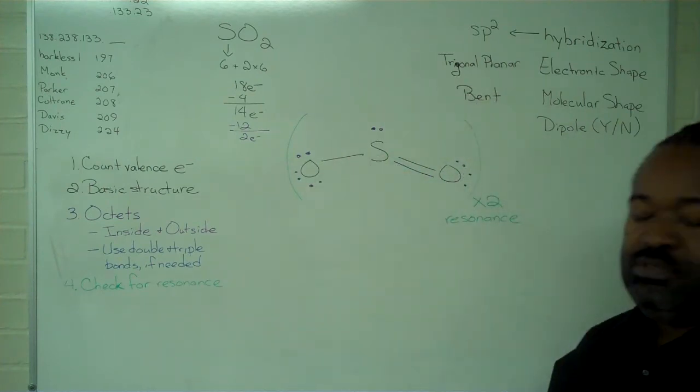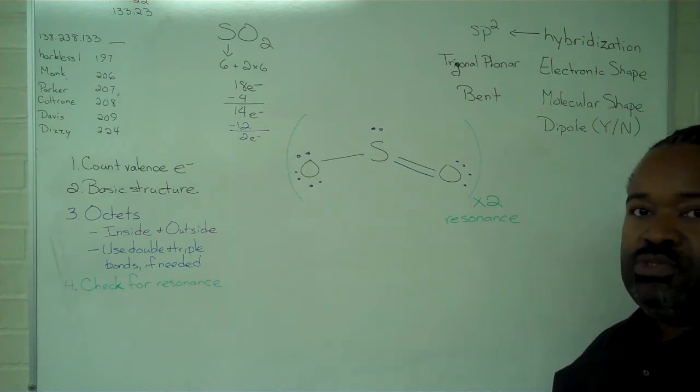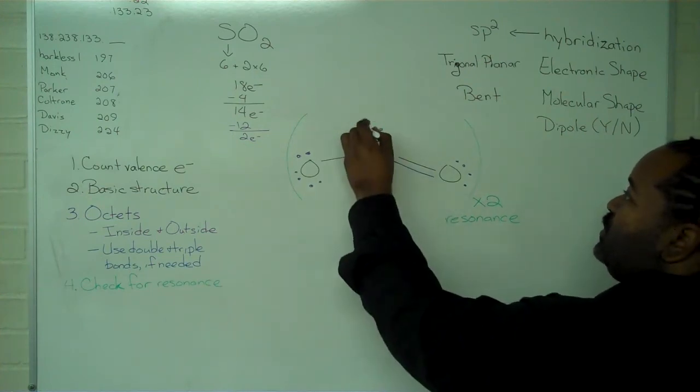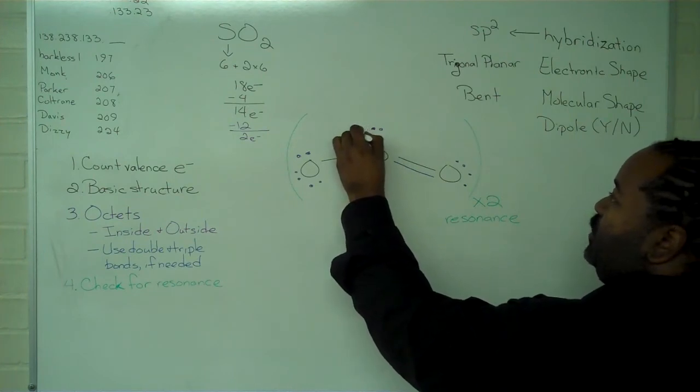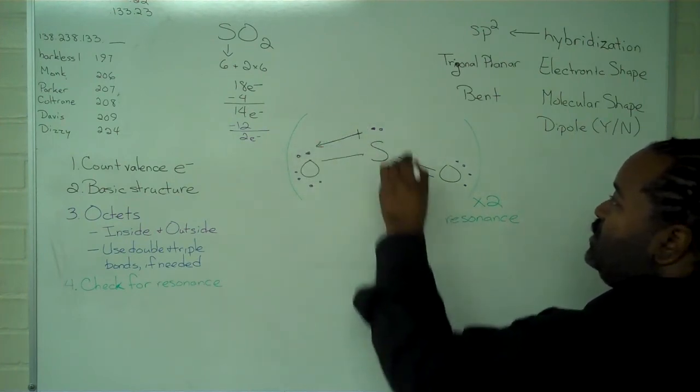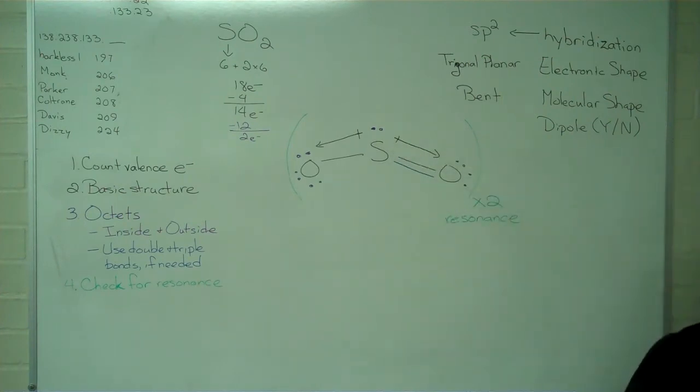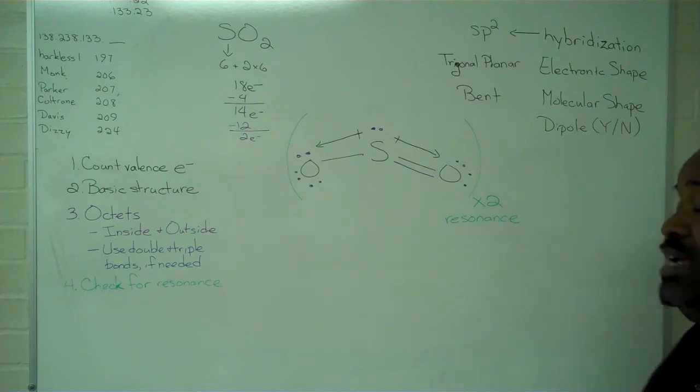And so because this molecule is bent, when we look to the electronegativity difference to determine polarity, we recognize that sulfur is going to be the positive end of the bond and oxygen, the negative end.